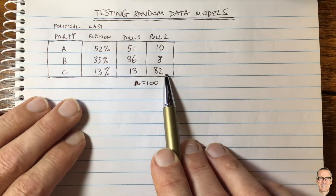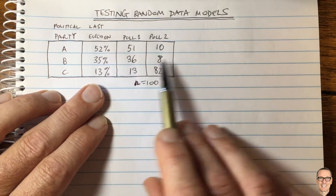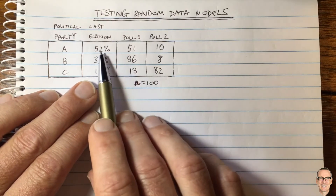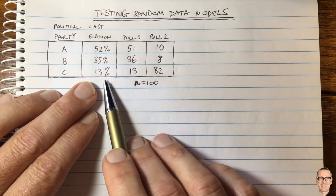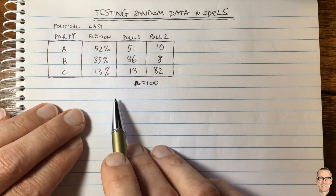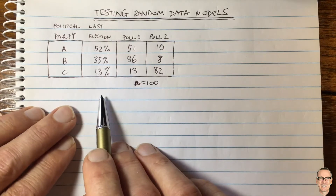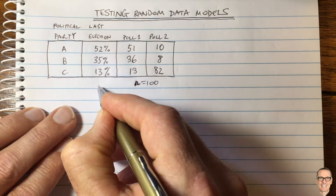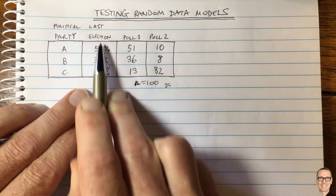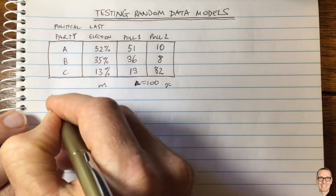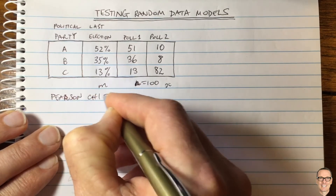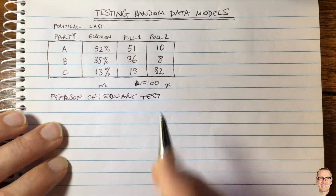That's a challenge for pollsters. We'd like some sort of test to decide this, and we'd like it to be independent of the actual numbers — we don't want one test for 52%, 35%, 13% and a whole different statistical test if the last election had a different outcome. This is where we come to what's called the Pearson's chi-square test. We'll call the expected values m and the observed outcomes x.